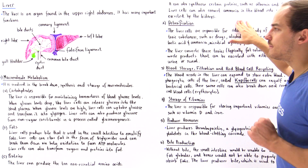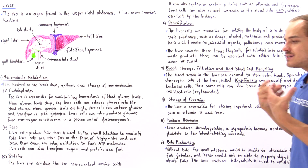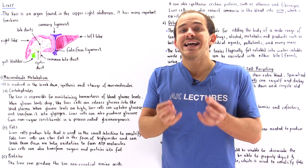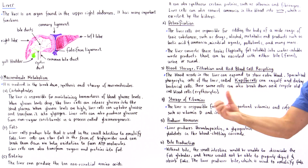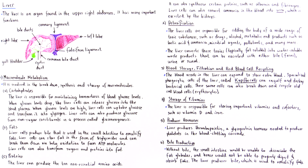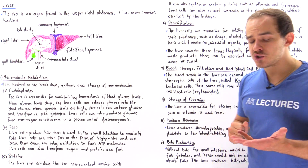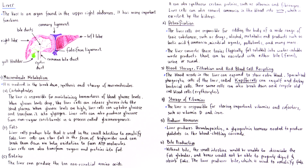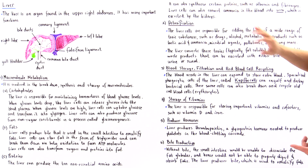The second important function of the liver is detoxification — taking toxic substances detrimental to our body and transforming them into less toxic substances that can be released. Liver cells rid the body of a wide range of poisonous substances, including drugs, alcohol, different types of metabolic end products such as lactic acid, and ammonia.